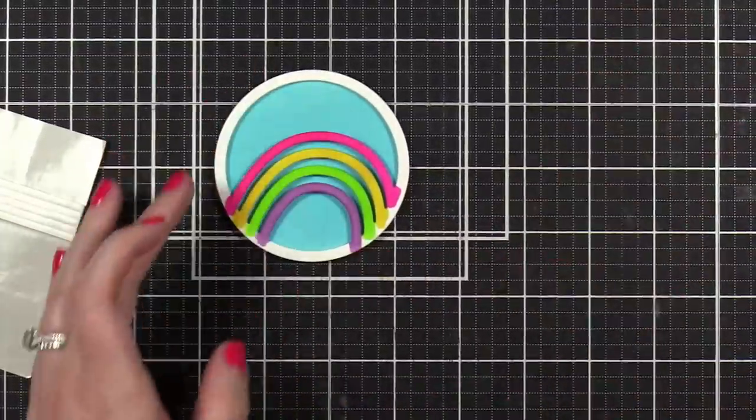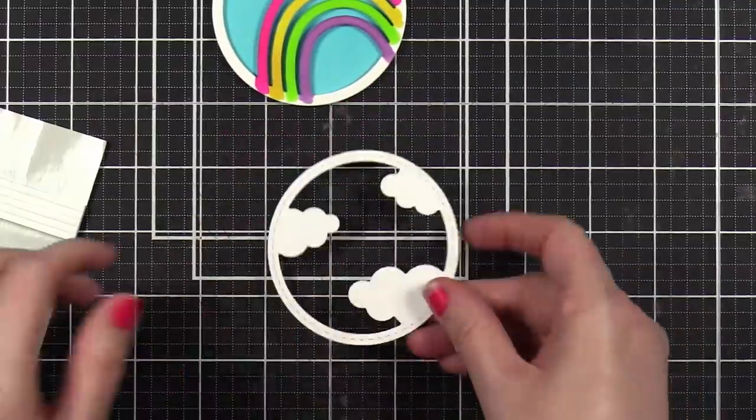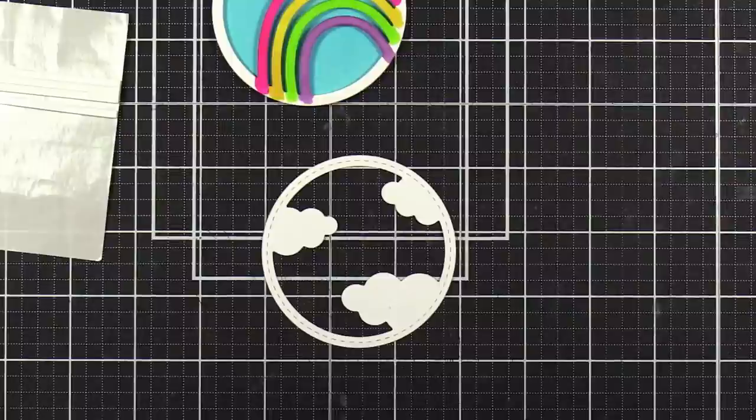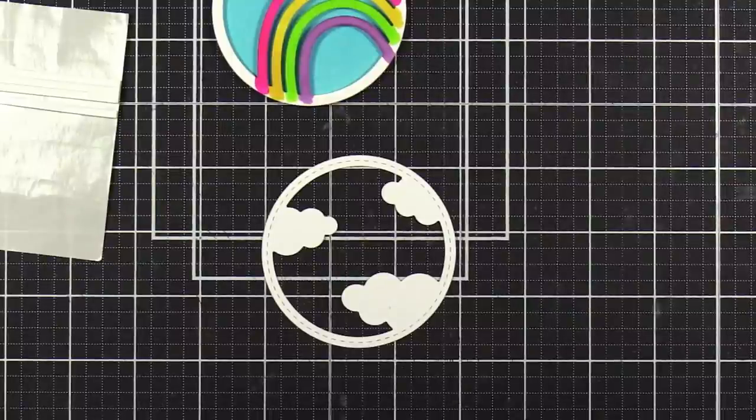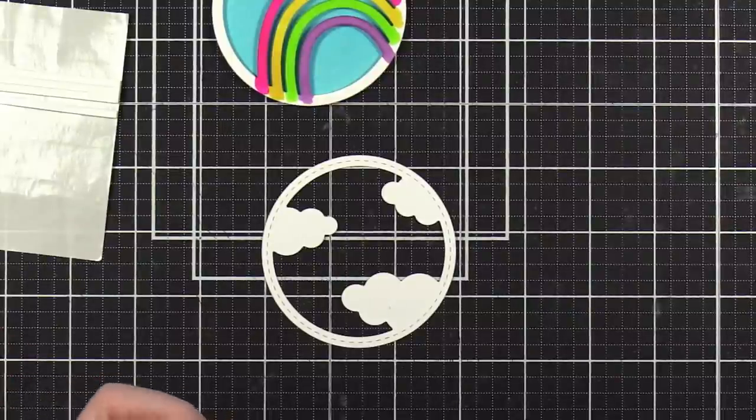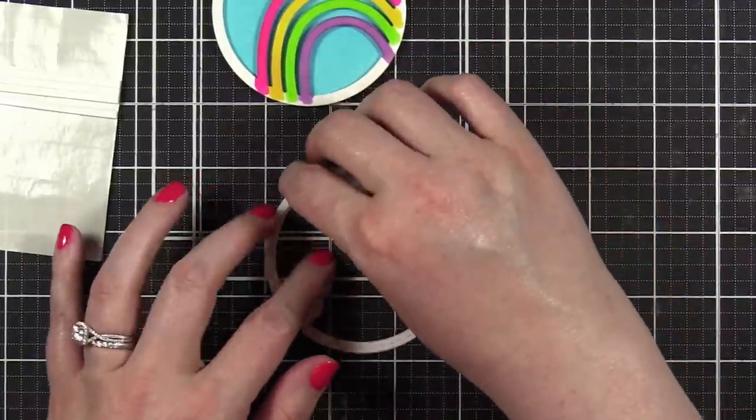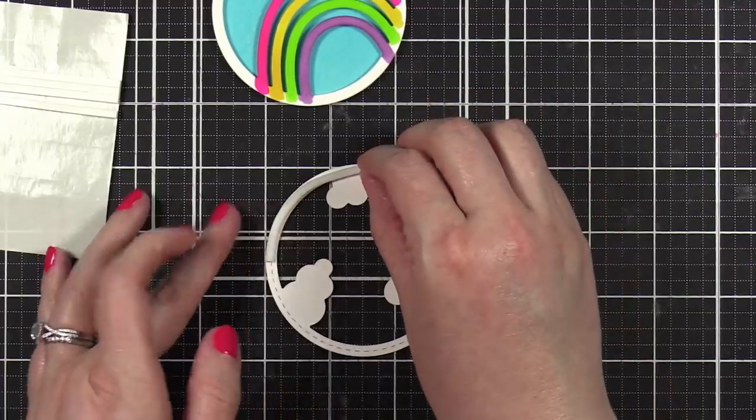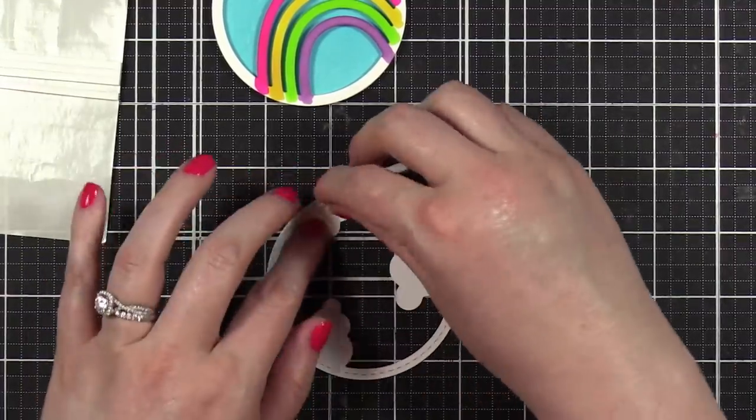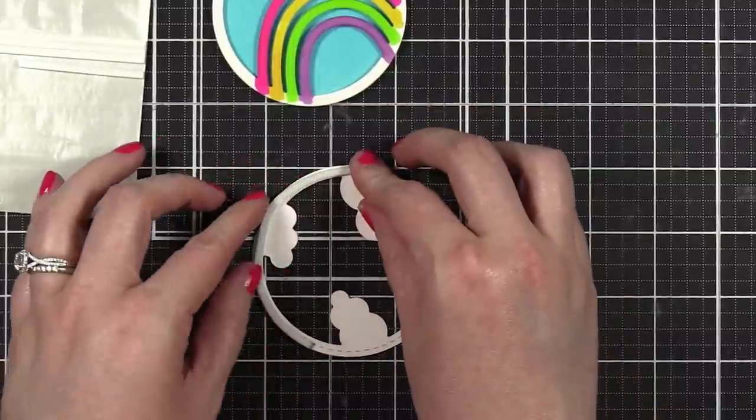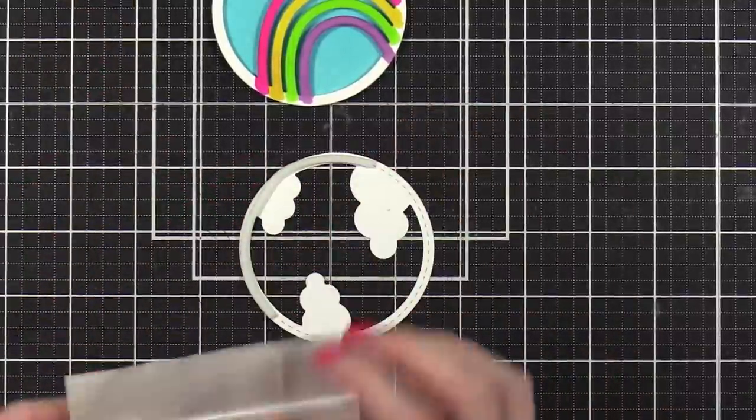We're gonna do the same thing with the clouds. We're gonna just put the adhesive on the outer edge. This would definitely make an excellent shaker card. I wanted to keep it pretty simple today and just do kind of like an almost like a shadow box layered look.